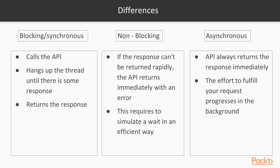Blocking and synchronous mean the same thing. You call the API, it hangs up the thread until it has some kind of answer, and then returns it to you. Non-blocking means that if an answer cannot be returned rapidly, the API returns immediately with an error and does nothing else. So there must be some related way to query whether the API is ready to be called — that is, to simulate a wait in an efficient way.